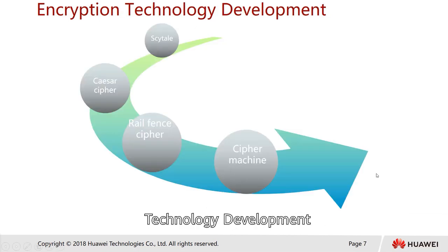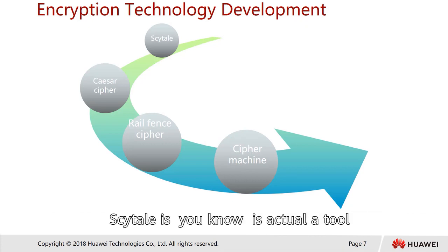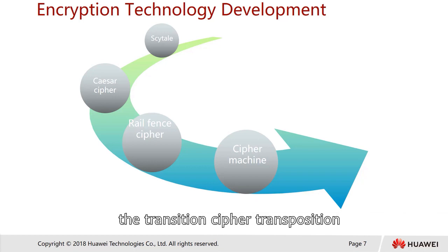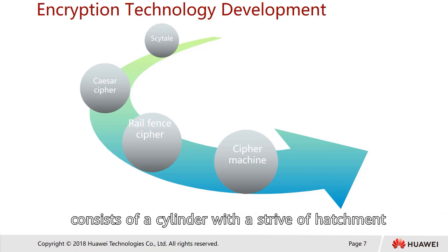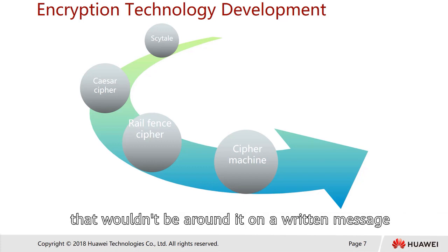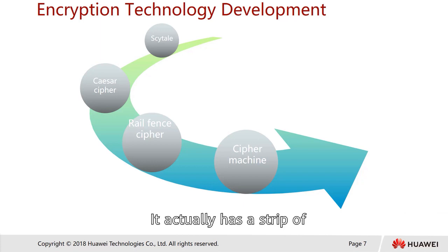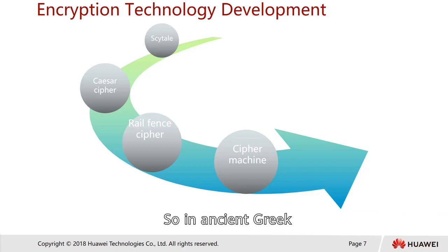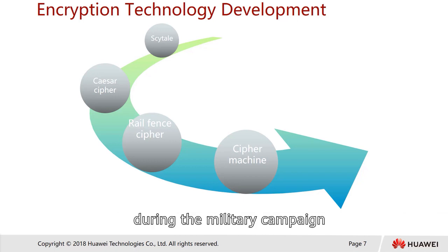Let's look at the encryption technologies development. First, we have the Scytale. The Scytale is a tool — you can call it a patent — used to perform transposition cipher. It consists of a cylinder with a strip of parchment wound around it with a written message. A strip of cloth is written on and wrapped around a cylindrical baton. The ancient Greeks, and the Spartans in particular, are said to have used this cipher to communicate during military campaigns.